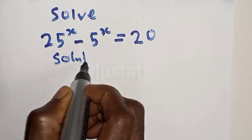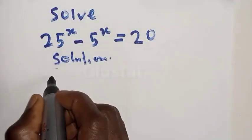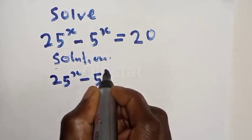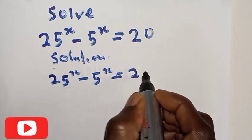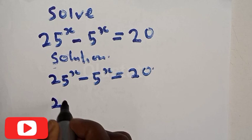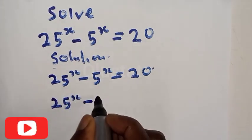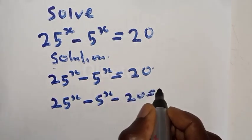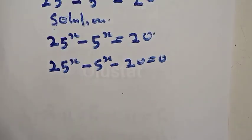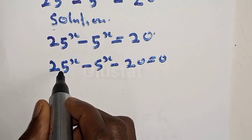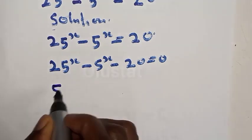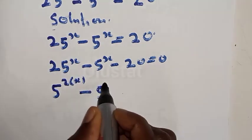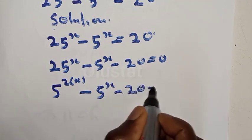Solution. We have 25 raised to power x minus 5 raised to power x is equal to 20. This can be expressed as 25 raised to power x minus 5 raised to power x minus 20 is equal to 0. Then this can be expressed as 5 squared into x minus 5 raised to power x minus 20 is equal to 0.